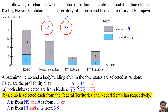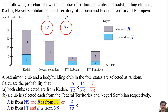The probability of the bodybuilding club being from Negeri Sembilan is 2 over 12. Multiply — the probability of the badminton club being from the federal territories is 3 plus 5 equals 8 over 33. Or — meaning plus —